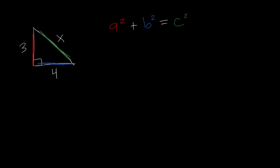Alright, so for this one, it's going to be 3 squared plus 4 squared equals x squared. Alright, I'll stop with the color coding.